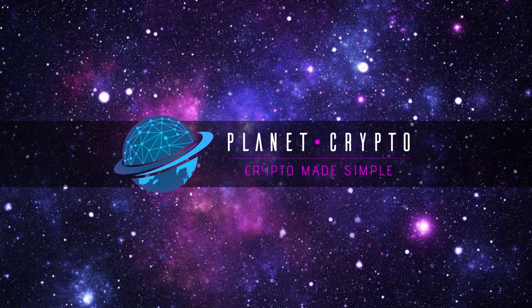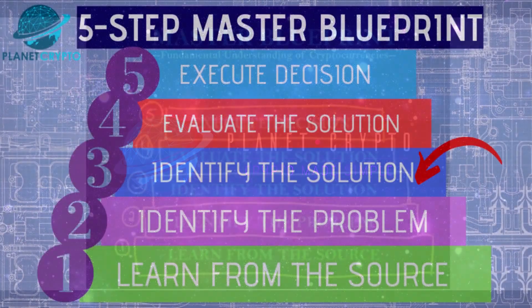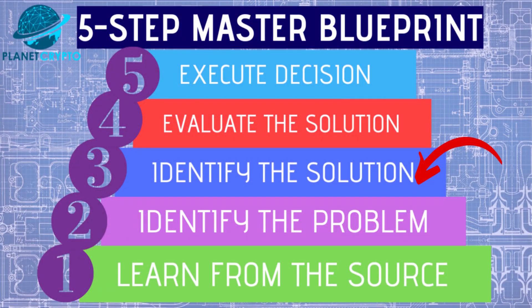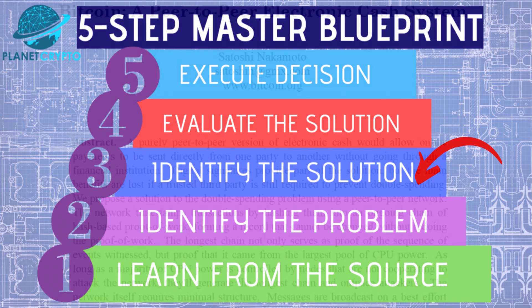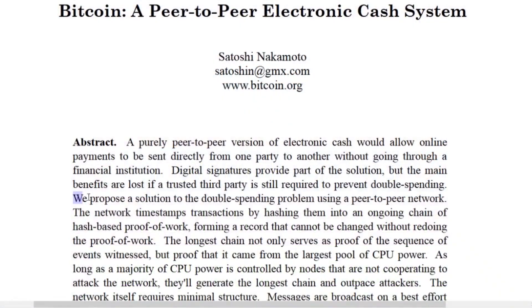You are probably thinking: Planet Crypto is saying that Bitcoin has eliminated the double spending problem — but how? This is a very good question. How Bitcoin has solved the double spending problem will be covered in the third step of the Master Blueprint: Identify the Solution. As it is written in the white paper: 'We propose a solution to the double spending problem using a peer-to-peer network.'